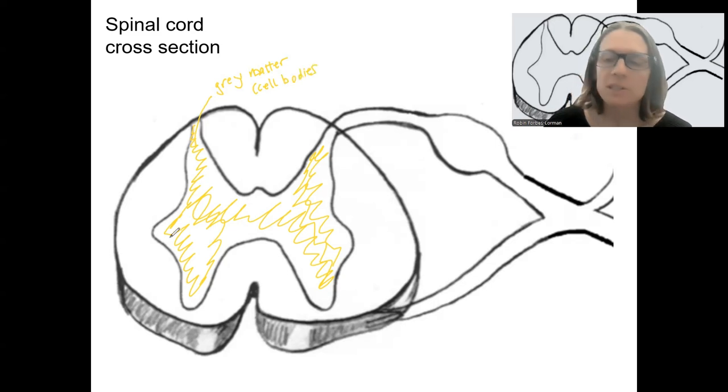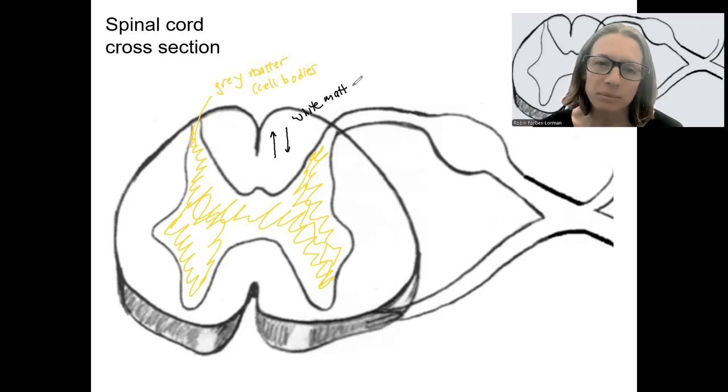The area of the spinal cord that surrounds that is white matter. That's where there are columns of axons going either toward the brain or away from the brain. So white matter containing columns of axons. And I'll talk about that a little bit more in a separate video.